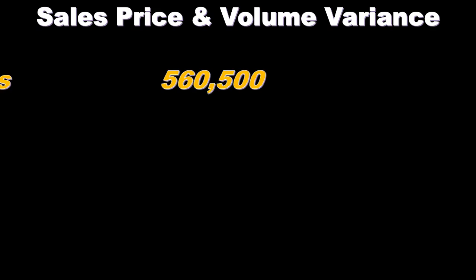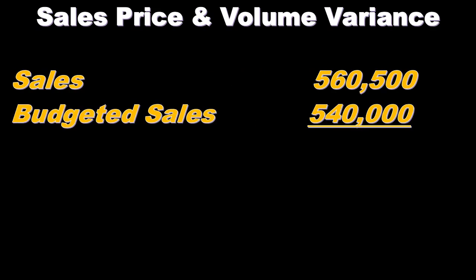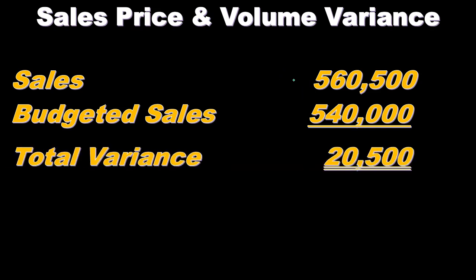We want to consider what the budgeted sales would be in comparison to the actual sales. We're imagining that we have the budgeted sales — in this case the $540,000 — and then we had the actual sales after we ran the process, and it was $560,000. The difference between the two is the variance, the change.